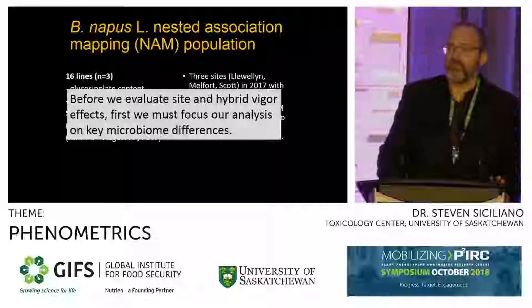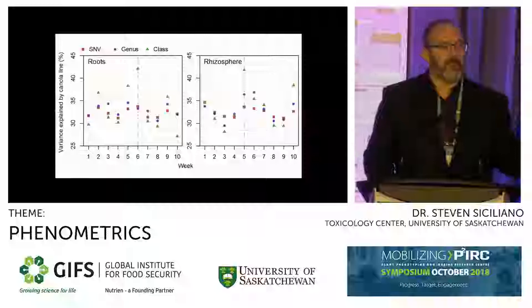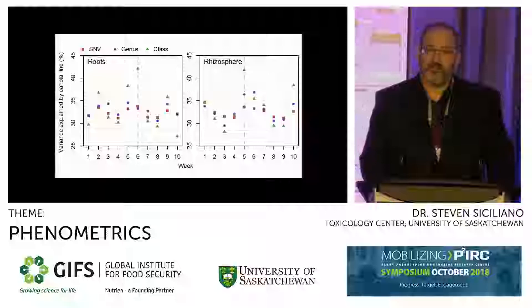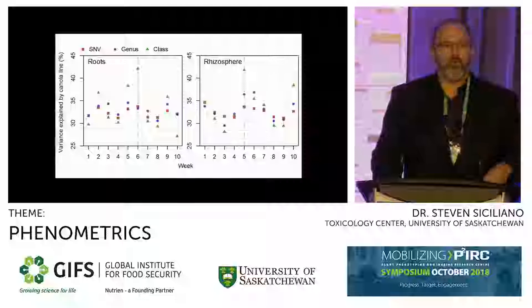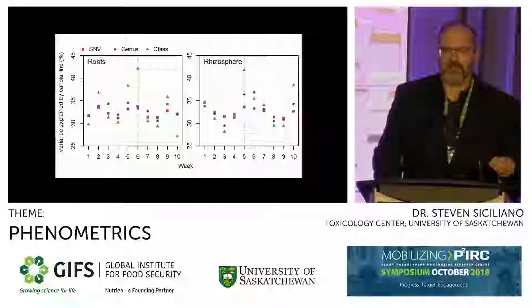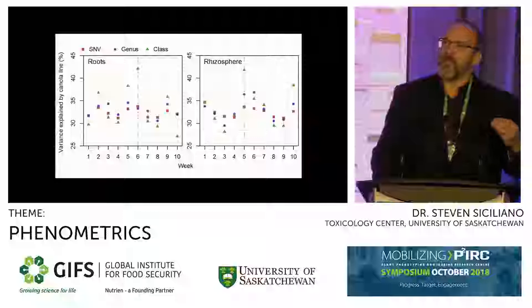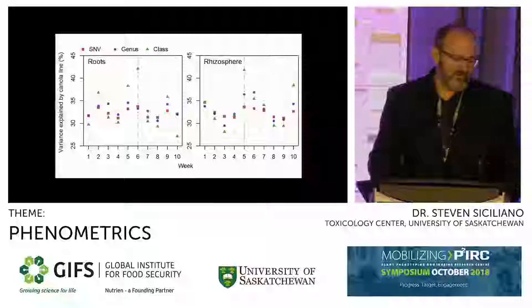Before we get into site and hybrid vigor, we wanted to first look at what are the key microbiome differences occurring between lines—or in essence, do breeders really matter when it comes to the microbiome, or is the microbiome just there and they can't influence it in any way? To do that, we took the entire microbiome and simply regressed it against these different lines and asked the question, is the variance explained by the microbiome matrix significantly different between lines? Do lines actually explain a lot of it?